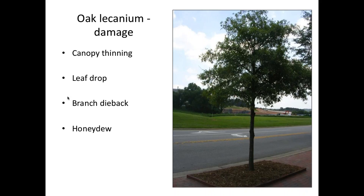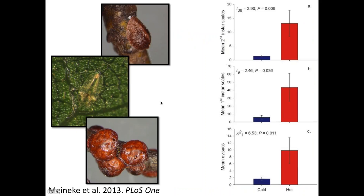My student Emily did similar research. When she compared trees in cooler spots to trees in hot areas of the city — again, about a 2 degree difference — she found about 8 to 12 times more scales on her hot trees than her cool trees.